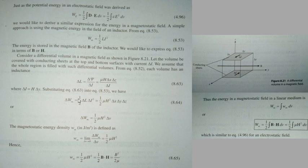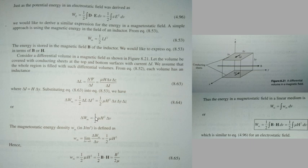The final expression for delta L is substituted along with delta i, giving delta Wm equal to half delta L times delta i square. Substituting: mu H times delta x times delta z, divided by delta i, times H times delta y. This simplifies to half mu H square times delta x, delta y, delta z — which equals half mu H square times delta V, the differential volume.